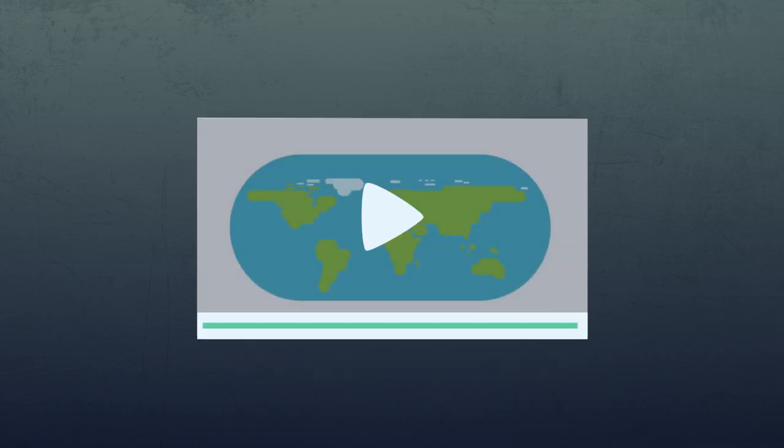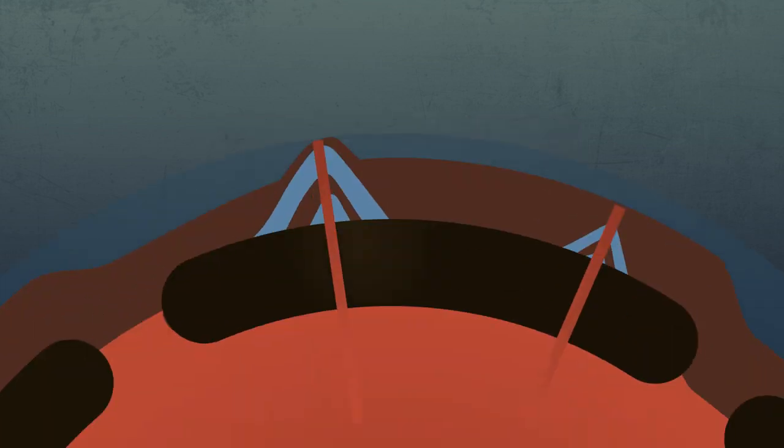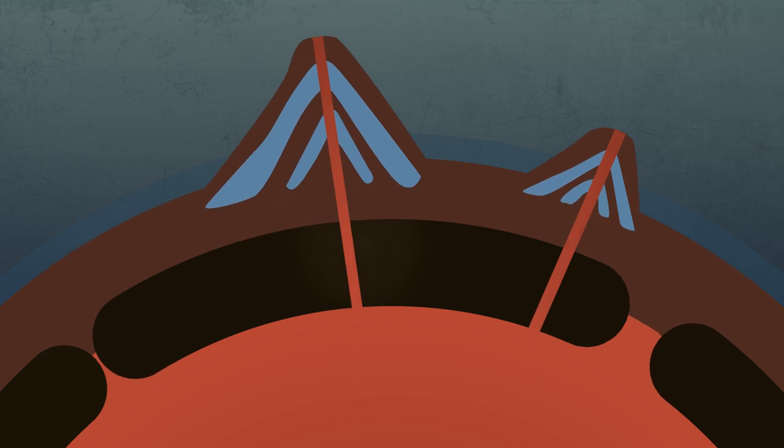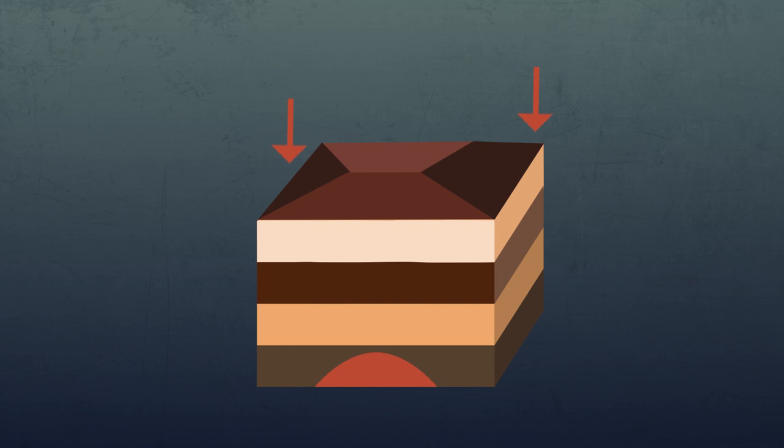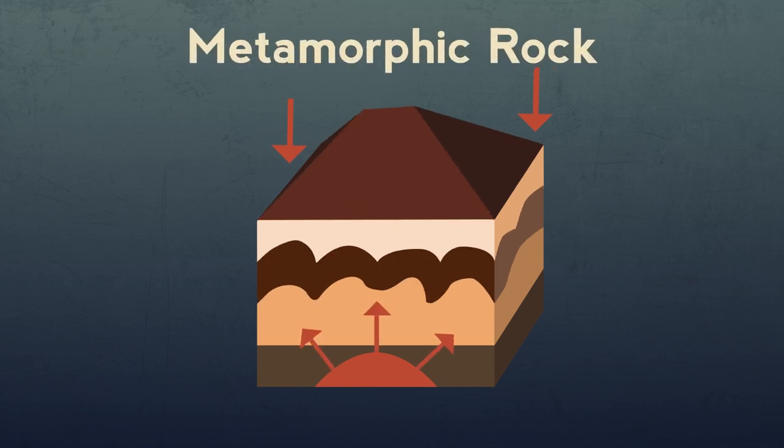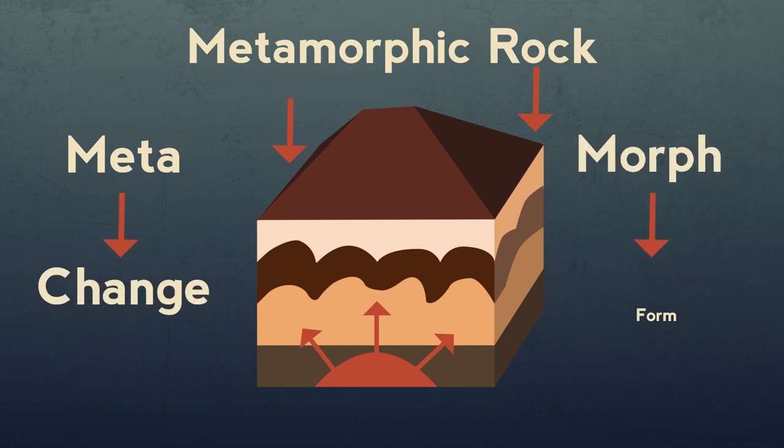During the movement of the great tectonic plates, see our related video, the rocks get folded and squashed often ending up high in the air as new mountains form. If rocks are heated and compressed enough they change their form and are called metamorphic rocks from the Greek meta change and morph form.